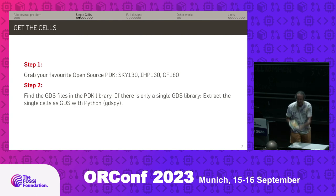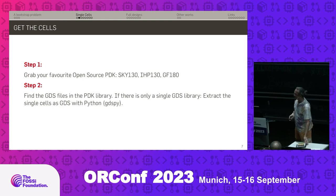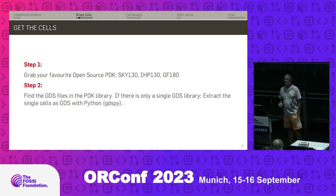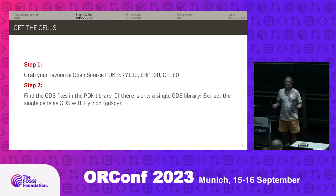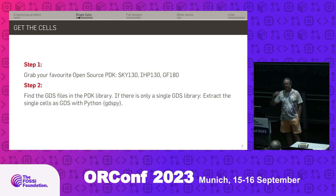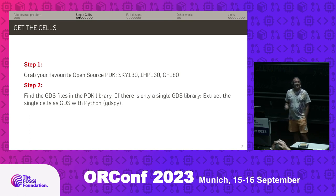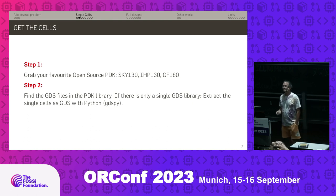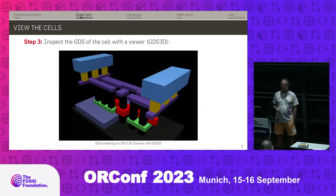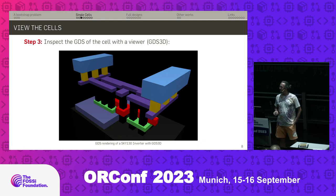If you want to print such a thing, you have to do some steps which starts with: grab your favorite open source PDK, like Sky130, IHP130, or Global Foundry 180. These are the ones that can really be produced out of a fab. You can find them online, download them — hooray. Get to the library and find the GDS files inside. If it's a single merged GDS library, unpack it with Python tooling like GDSpy. You can download a viewer like GDS3D and start exploring the cells.